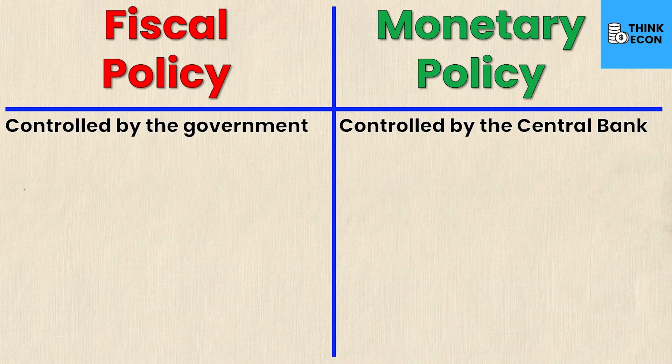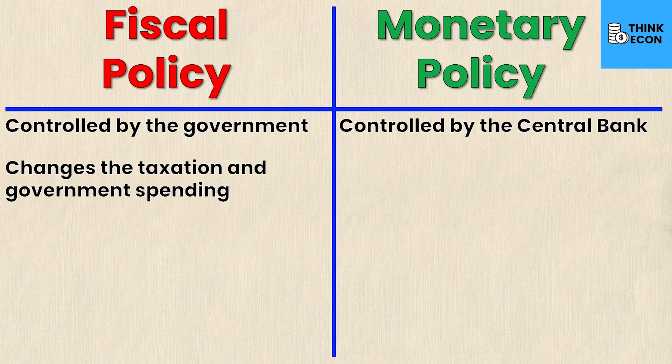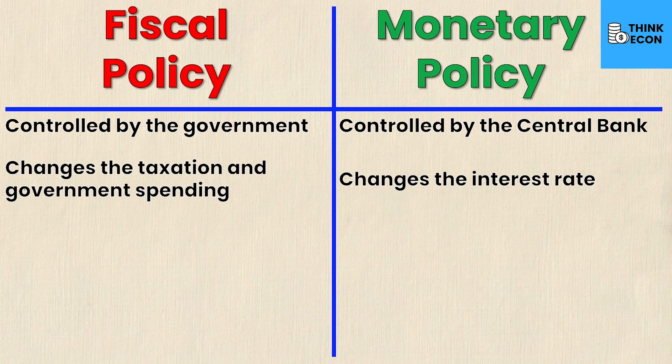The second big difference is that fiscal policy takes place by changing taxation and government spending, whereas monetary policy takes place by changing the interest rate. So the key drivers in these two policies are very different things. Taxation and government spending are controlled by the government, and the interest rate is set by the central bank.